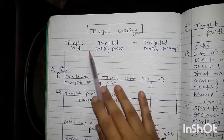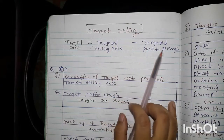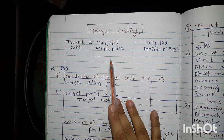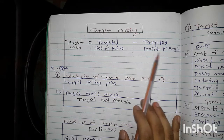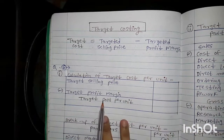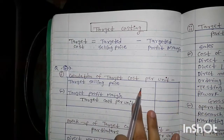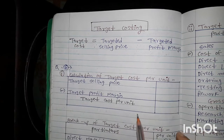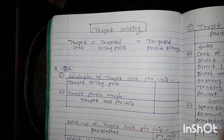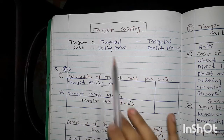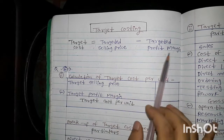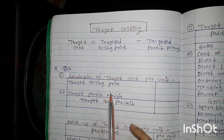Target costing is basically: Target Cost = Targeted Selling Price minus Targeted Profit Margin. In every company, the targeted selling price is decided in advance. So if we subtract the targeted profit margin from that selling price, we get the target cost. Basically, sales minus profit gives us cost — same logic applies here but with targeted figures. So targeted selling price minus targeted profit margin gives us the target cost.